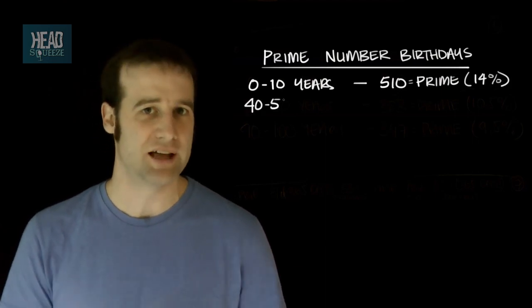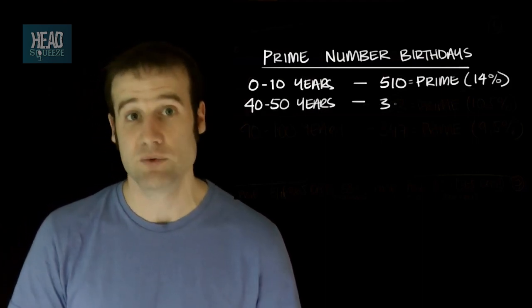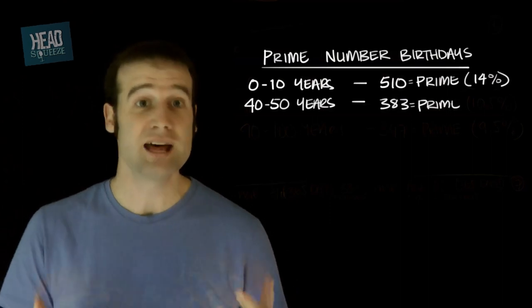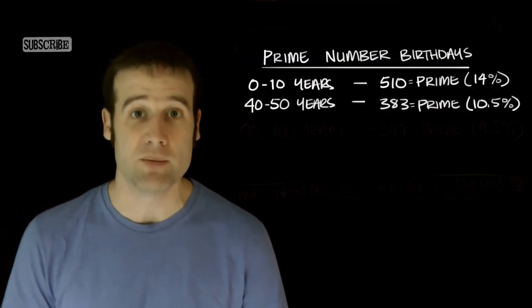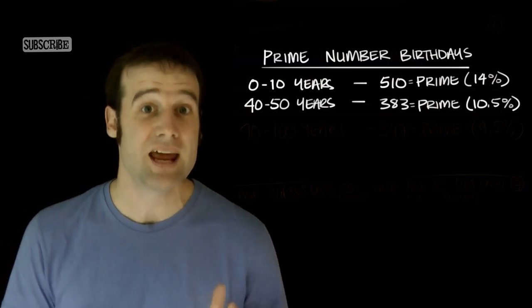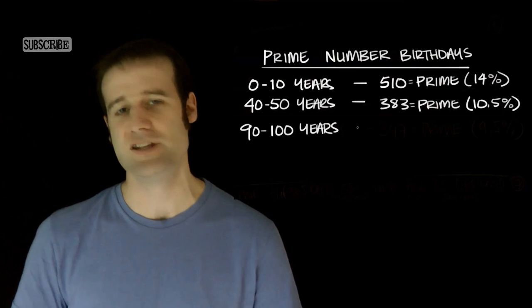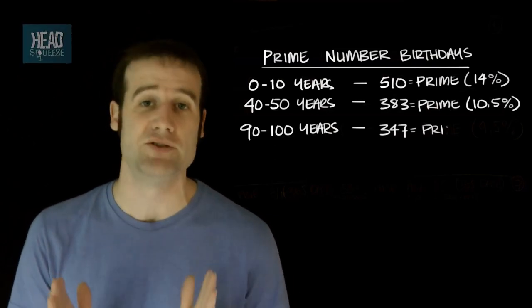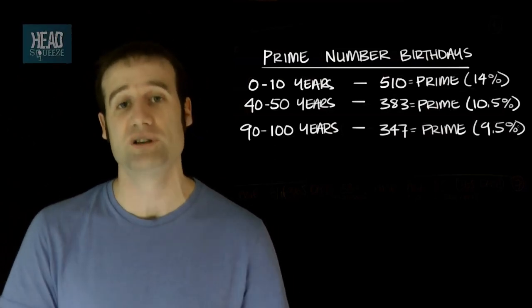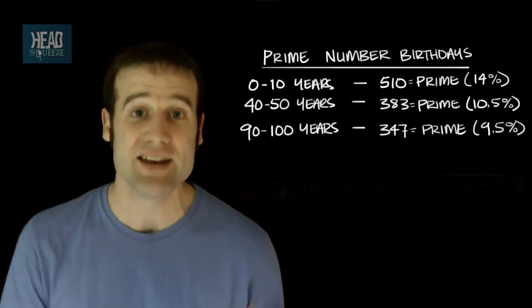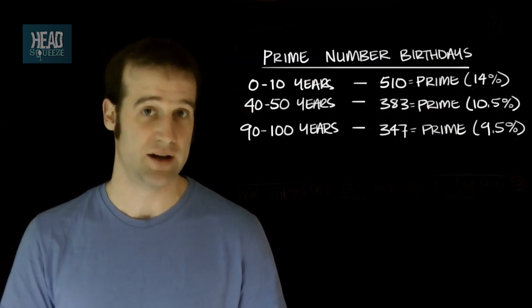By middle age, though, things aren't so good. For your fifth decade, which is from 40 through to 50, the same number of days, only 383 of them are actually prime numbers. That's 10.5%. It's dropped a fair bit. And by the end of your 100 years, from 90 through to 100, you will only have 347 prime-numbered days in that decade. That's 9.5%.